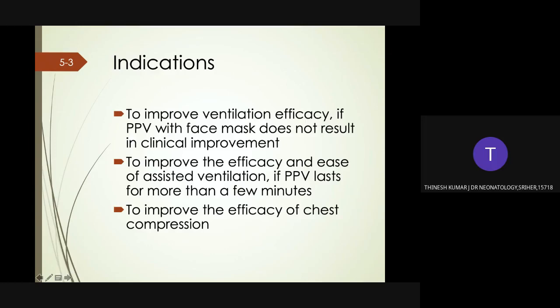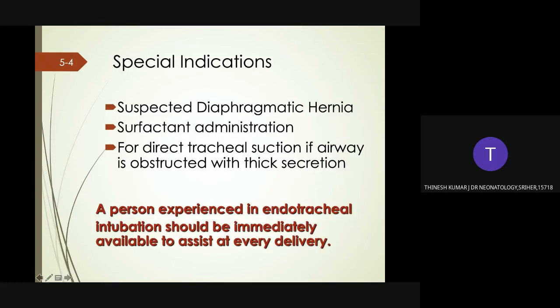If intubation is not successful or feasible, a laryngeal mask may be used. An endotracheal tube provides the most reliable airway access in special circumstances such as stabilization of the newborn with suspected diaphragmatic hernia, surfactant administration, or direct tracheal suction if the airway is obstructed by thick secretion. A person experienced in endotracheal intubation should be immediately available to assist at every delivery.